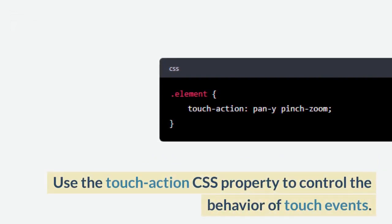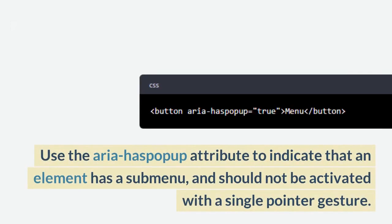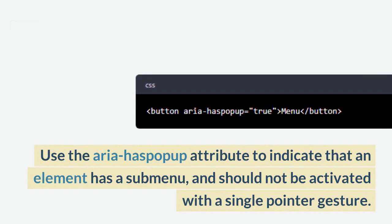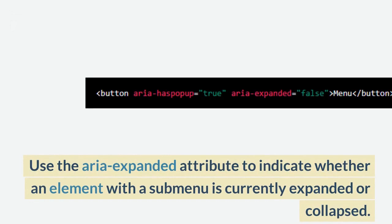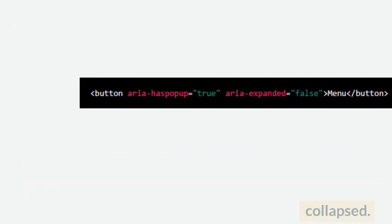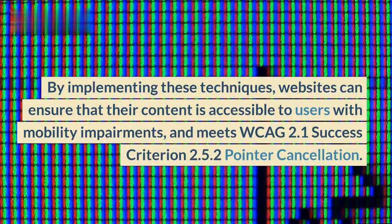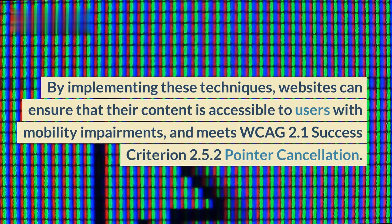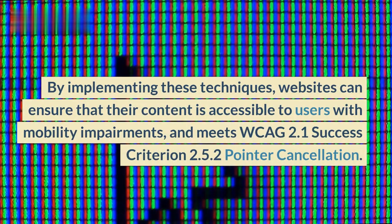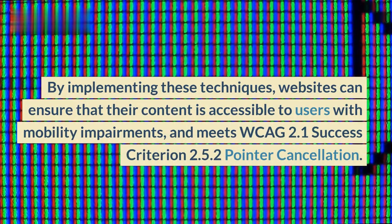Use the touch-action CSS property to control the behavior of touch events. Use the aria-haspopup attribute to indicate that an element has a submenu and should not be activated with a single pointer gesture. Use the aria-expanded attribute to indicate whether an element with a submenu is currently expanded or collapsed. By implementing these techniques, websites can ensure their content is accessible to users with mobility impairments and meets WCAG 2.1 Success Criterion 2.5.2 Pointer Cancellation.